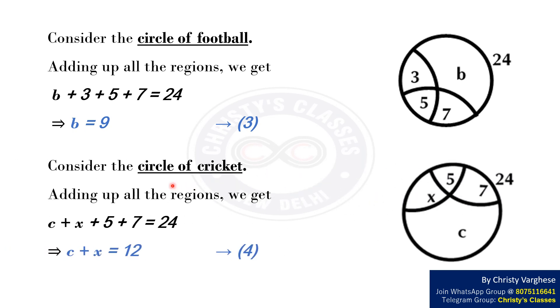Finally, consider the circle of cricket. Adding up all the regions, we get C plus X plus 5 plus 7 equals 24. This implies that C plus X equals 12. Let this be equation 4.